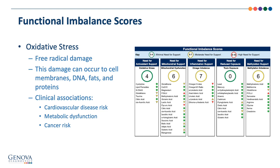Oxidative stress is evidence of free radical damage. This damage can occur to cell membranes, DNA, fats, and proteins, with biomarkers such as lipid peroxides, 8-hydroxydeoxyguanosine, and glutathione listed here. Oxidative stress is associated with many clinical conditions, such as cardiovascular disease risk, metabolic dysfunction, and cancer disease, among others.